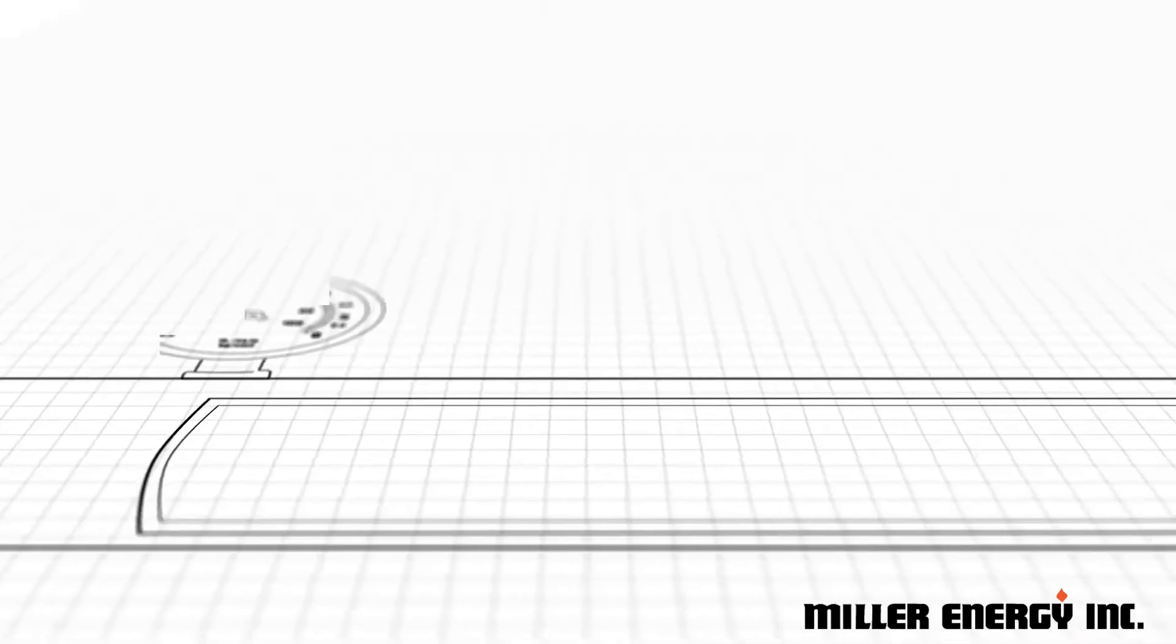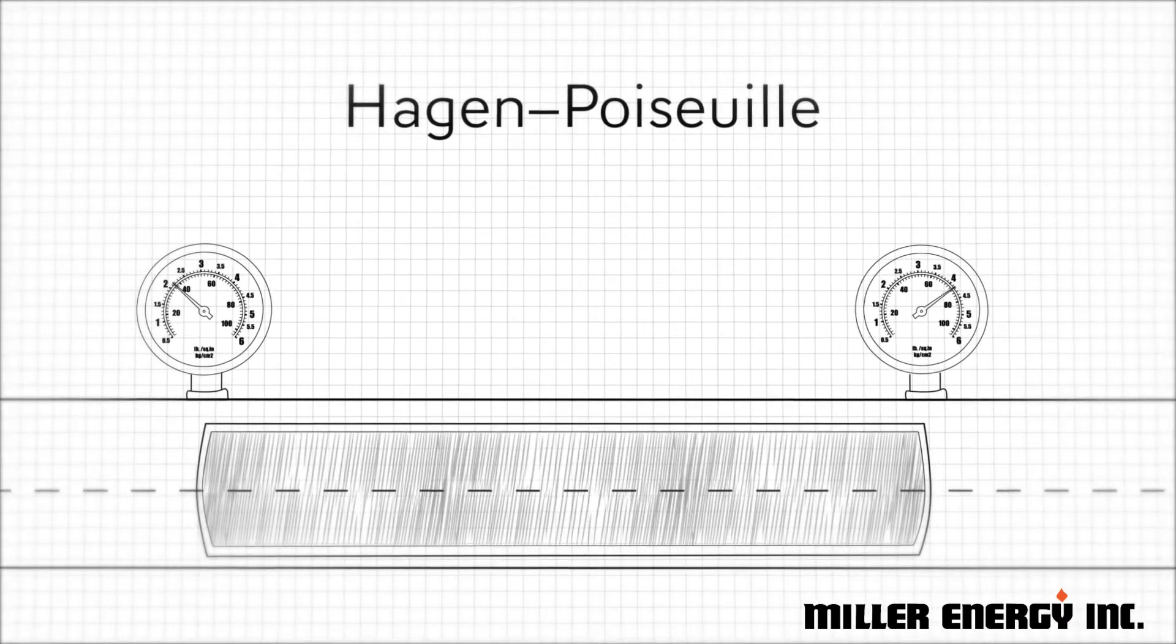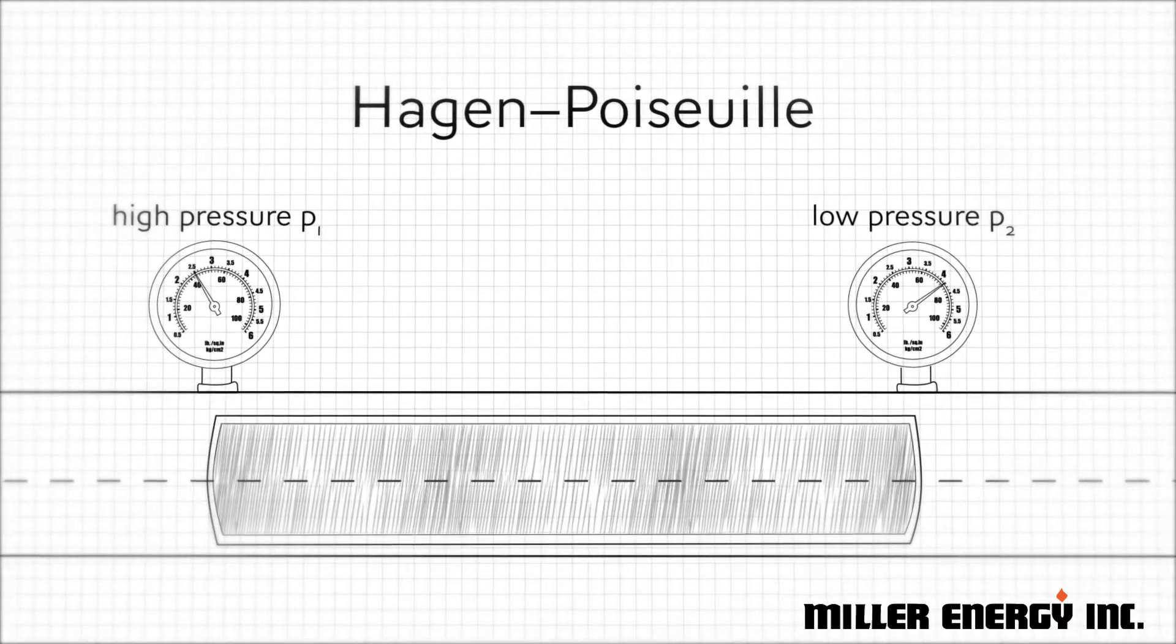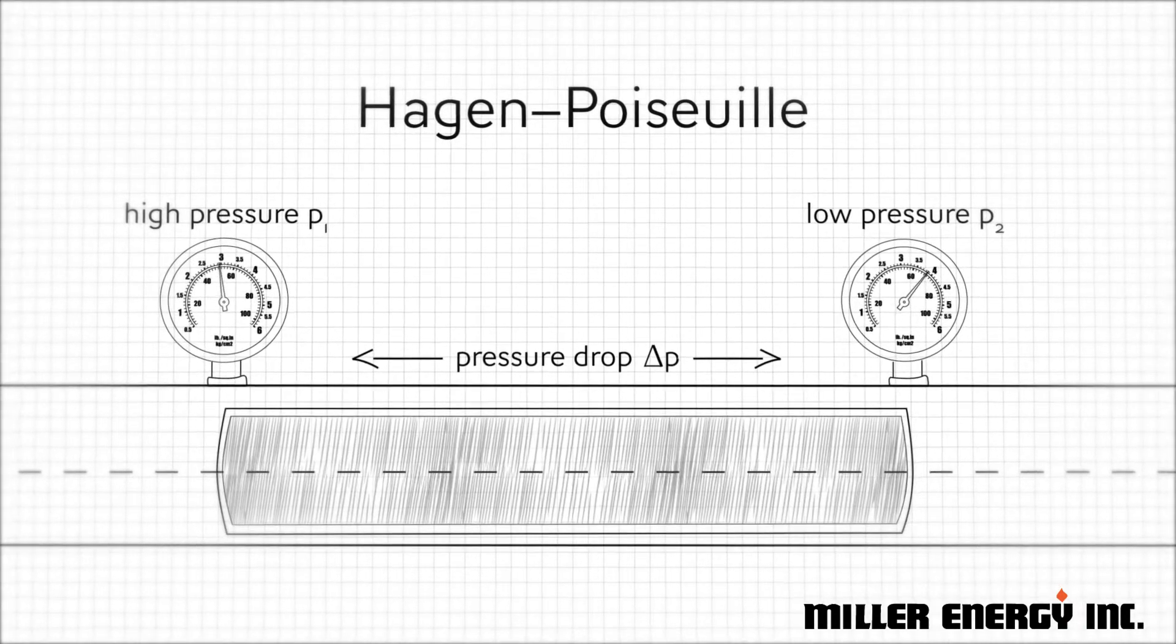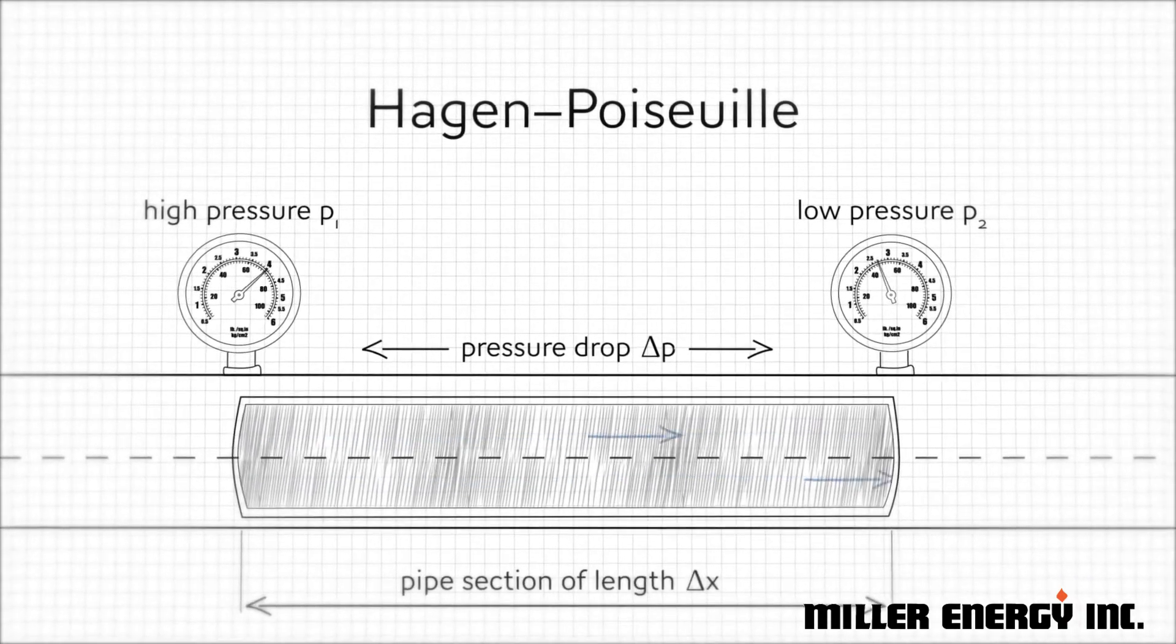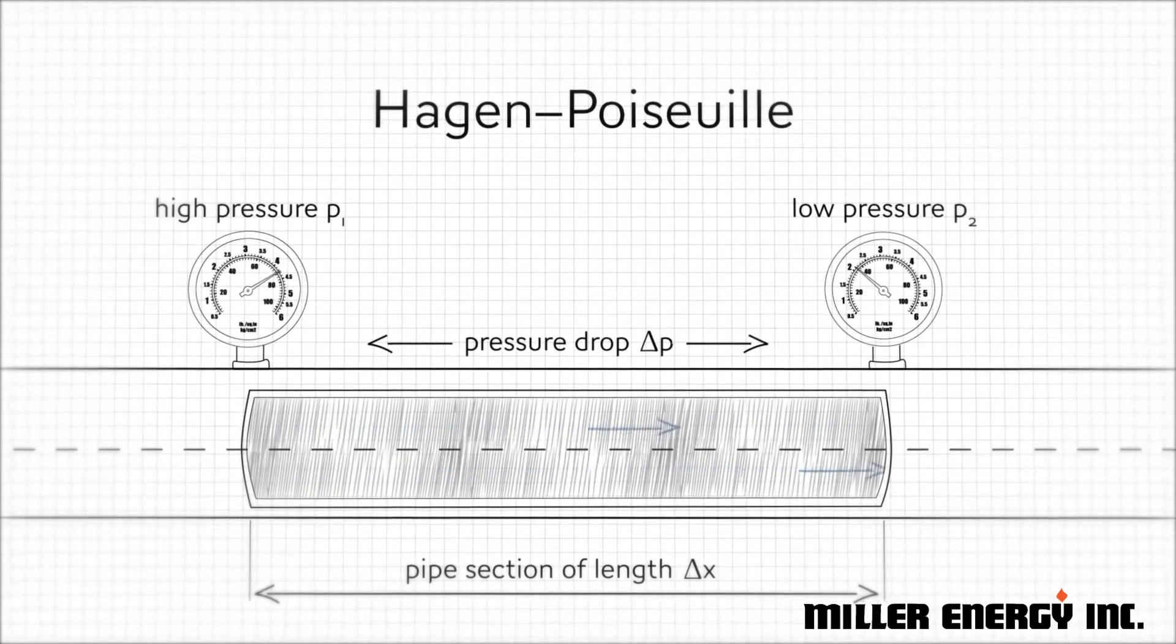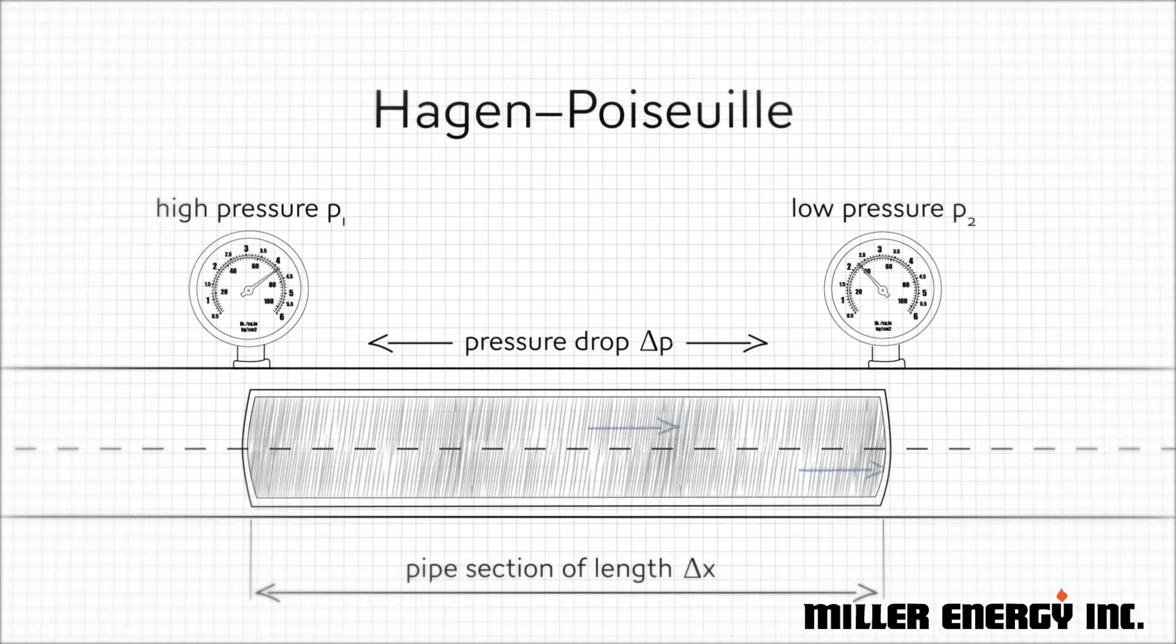Pressure-based mass flow controllers are based on the Hagen-Poiseuille equation. This physical law describes the pressure drop in an incompressible fluid with a laminar flow through a long cylindrical pipe of constant cross-section and can also be extended for use with compressible fluids or gases.